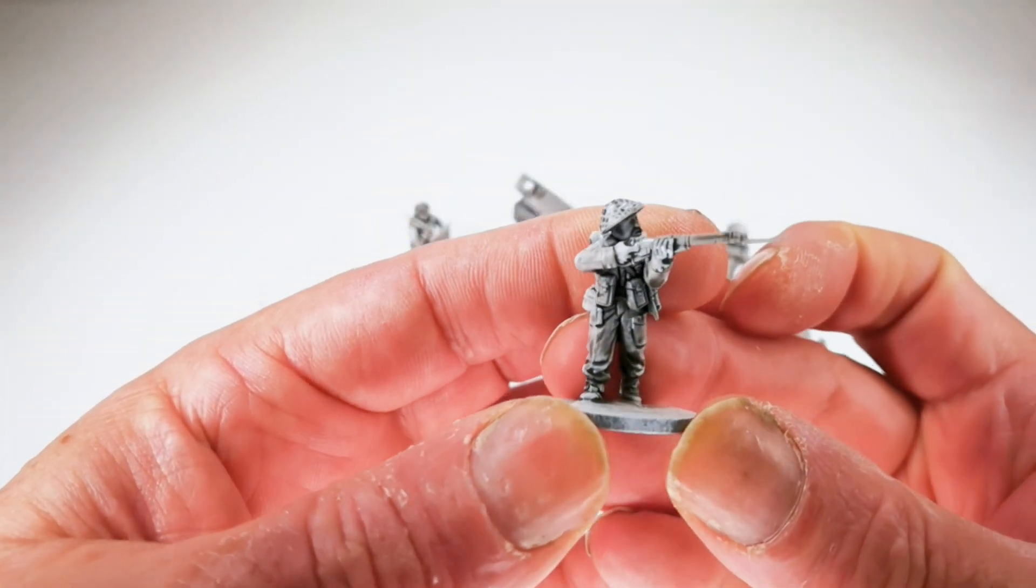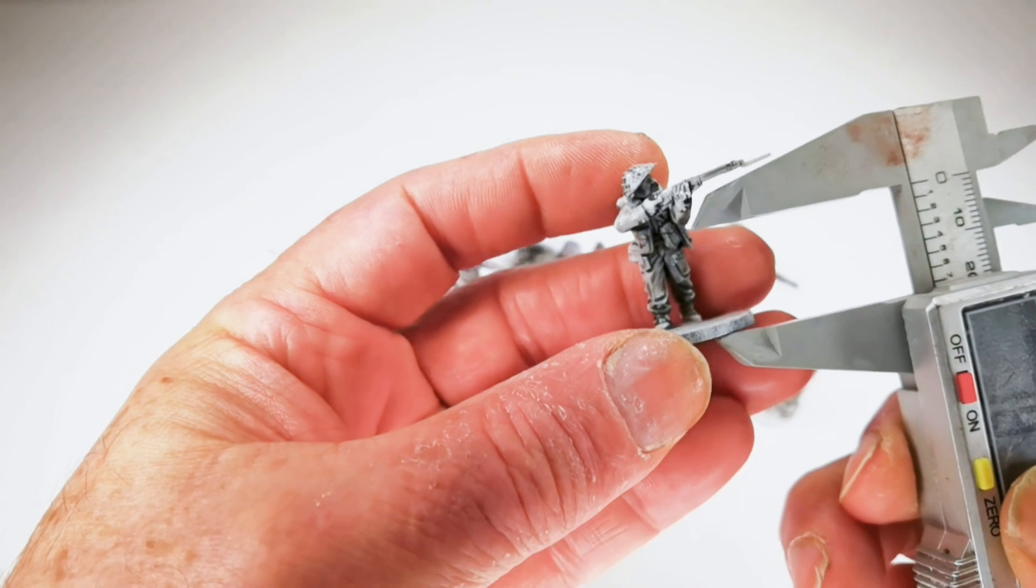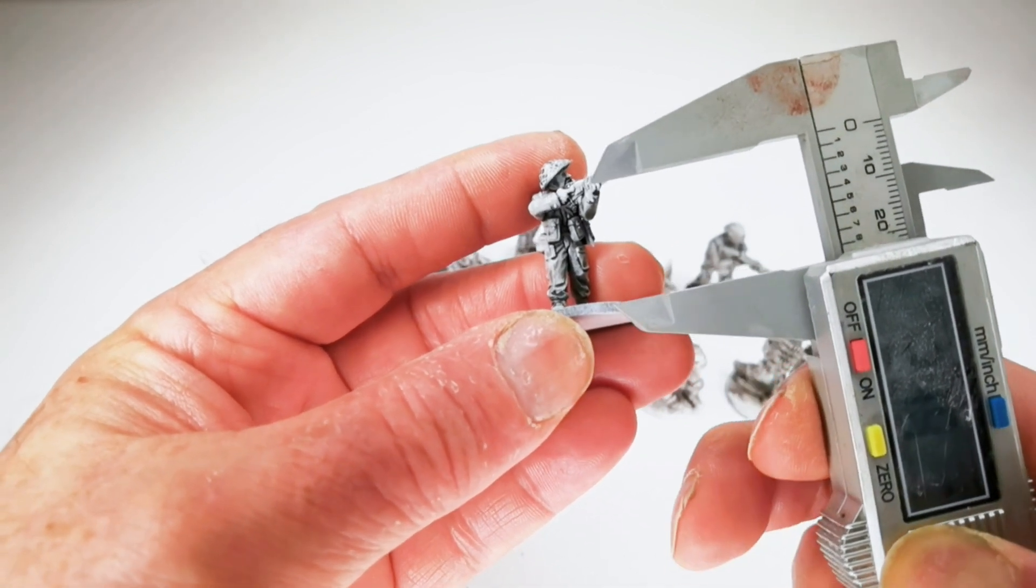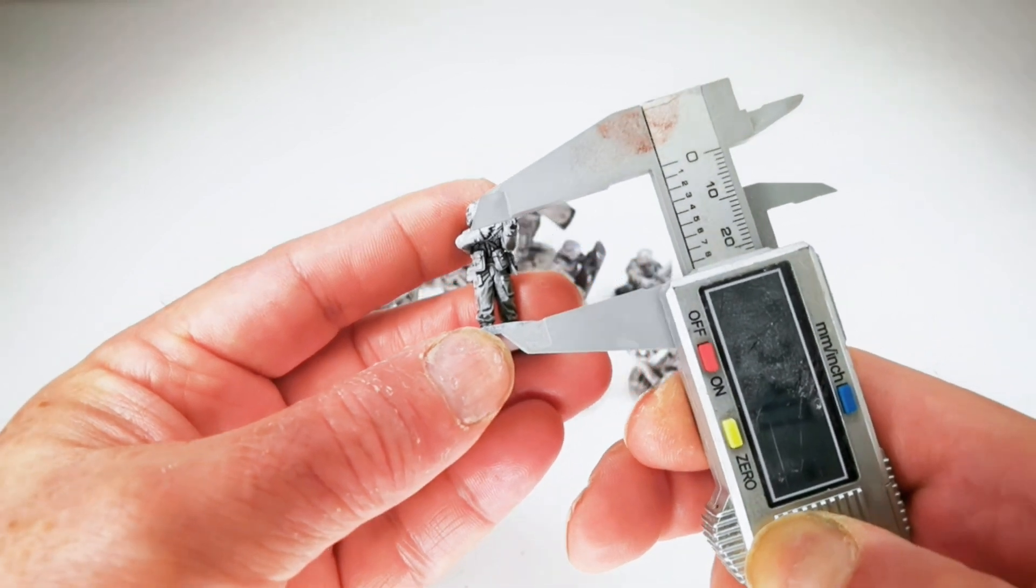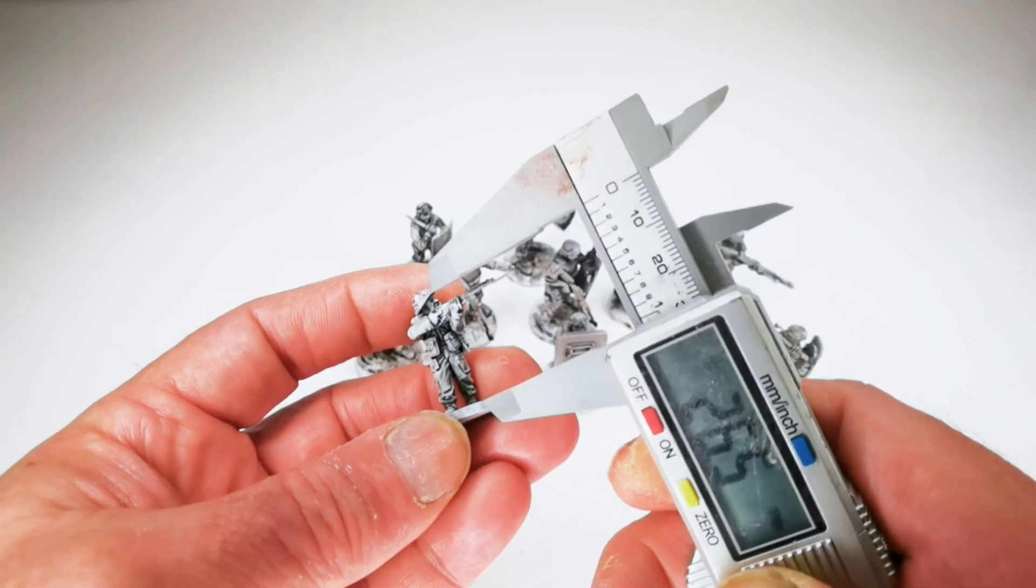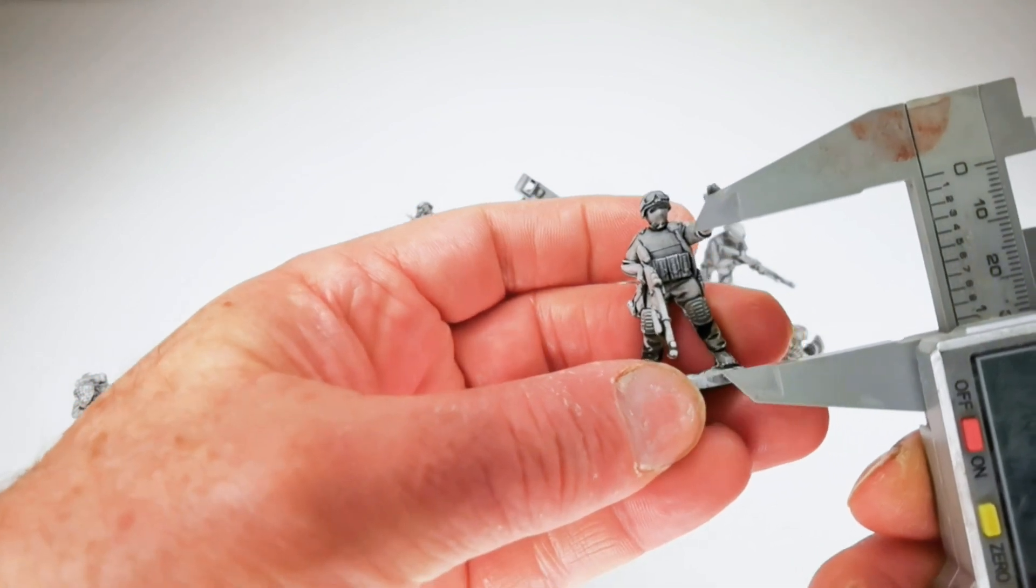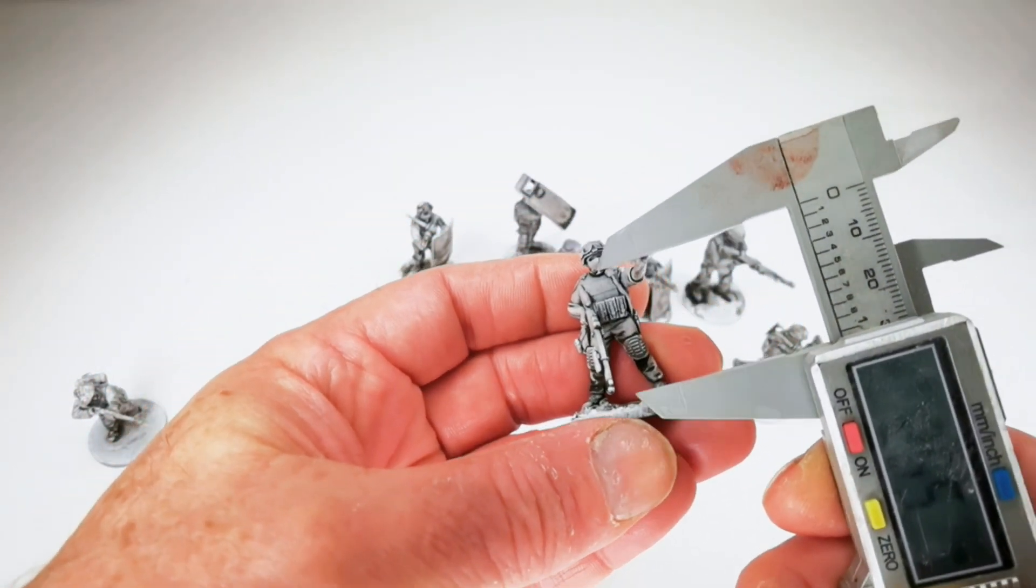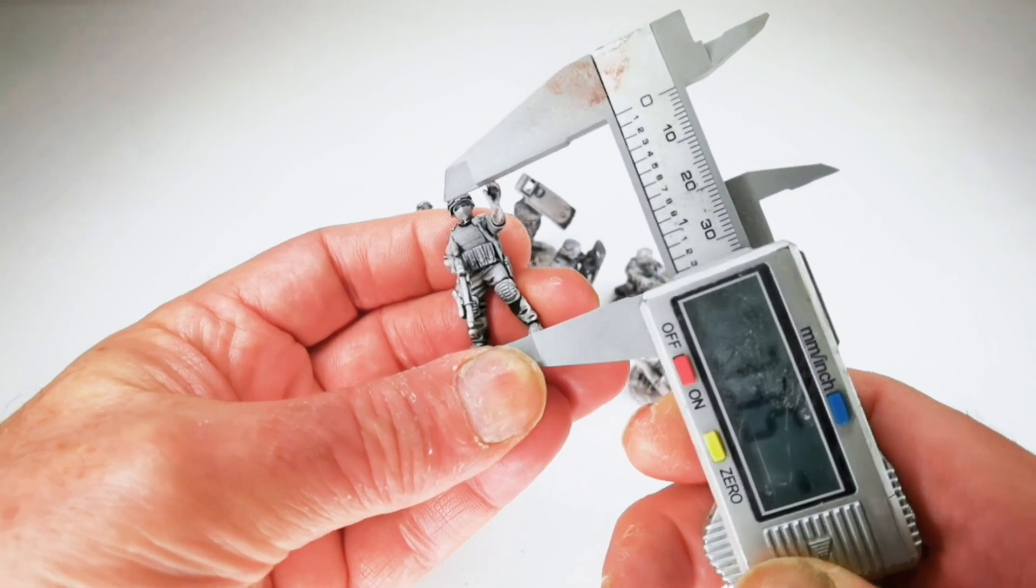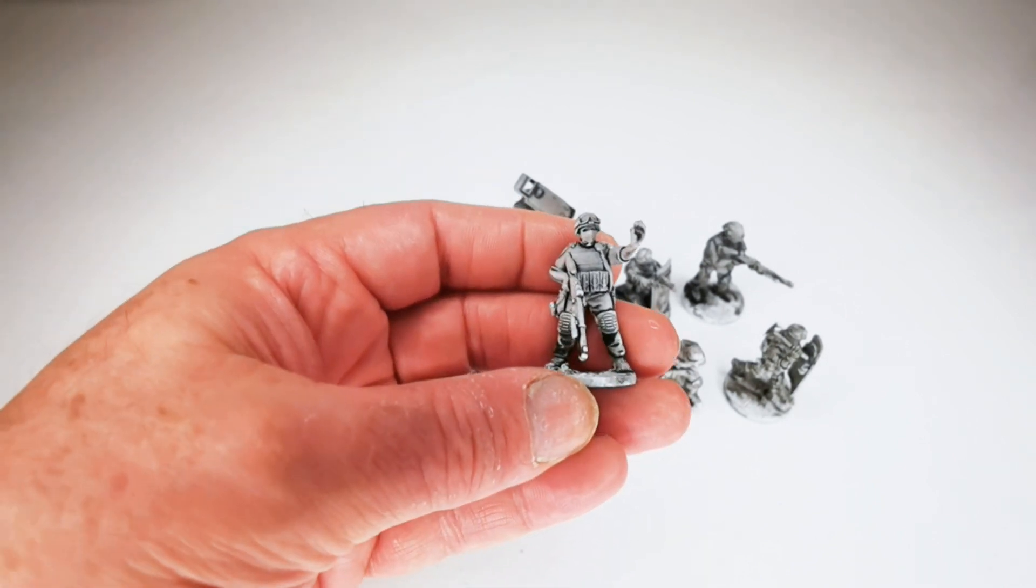Just before we start, there's a Warlord Games British Infantry and a 28mm figure. And if we just take a rough look at foot to eye, that's going to be about 27mm-ish. If we look at foot to eye on the Albino Raven Miniature, then we're going to get about 33mm-34mm. So maybe they're scaled at 32mm.